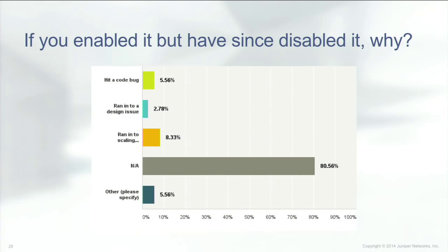The next question was: if you have enabled it but have since disabled it, why? The high N/A response I interpret to mean that for most people who have enabled BGP flow spec and given it a try, they've left it on — they haven't gone back and disabled it. There were a few people who ran into a code bug, an issue with how it worked in their design, or a scaling parameter that required them to remove it. But the overwhelming majority — almost 81% of people who have enabled it — have stuck it out.